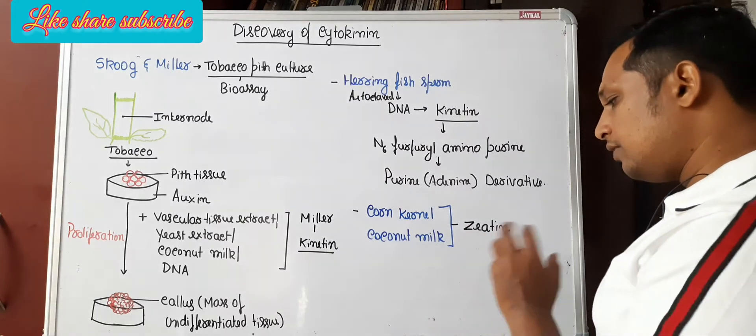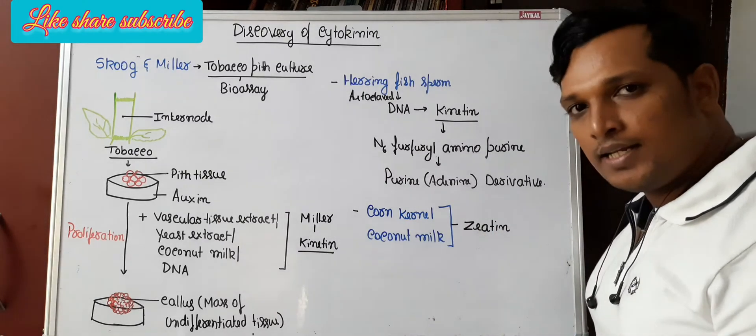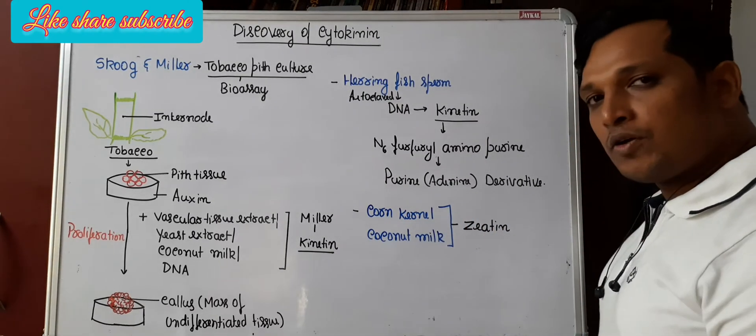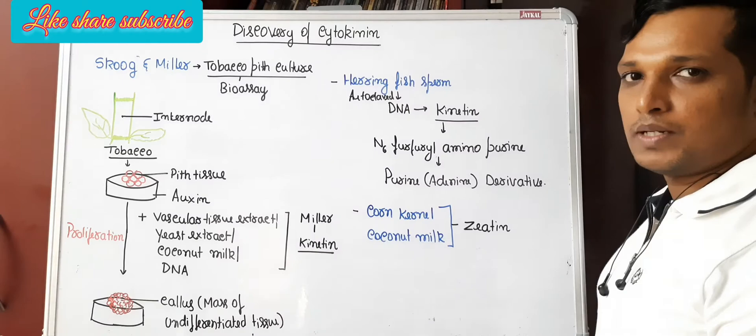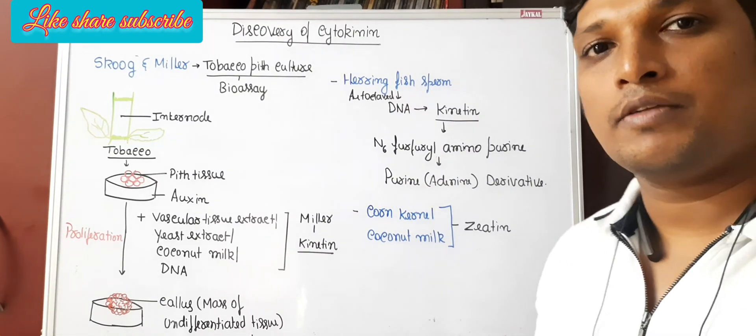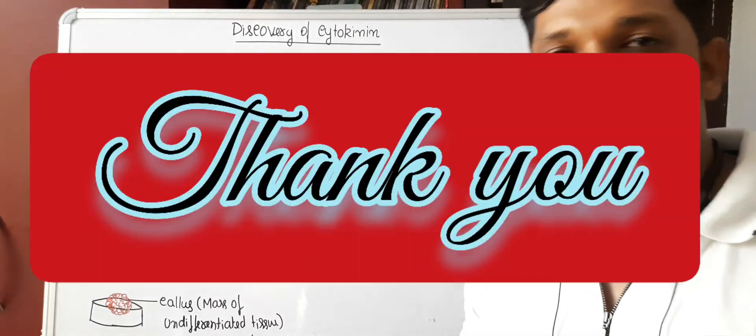The name zeatin comes from the scientific name of corn, which is Zea mays, hence it was named zeatin. So this is how the discovery of cytokinin took place. I hope you liked the video, thank you.